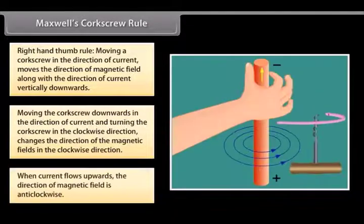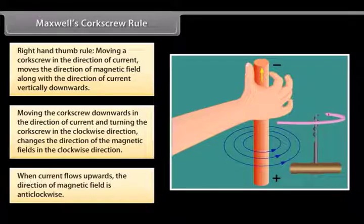So, when current flows upwards, the direction of magnetic field changes and is anticlockwise.